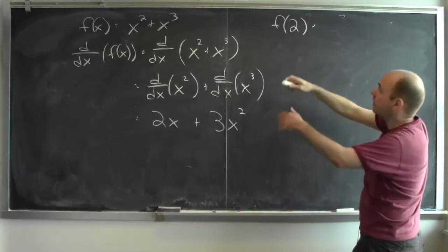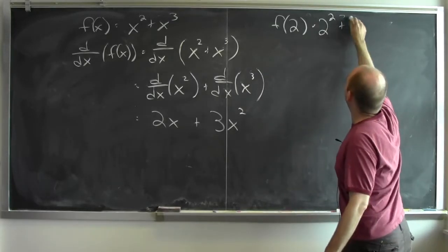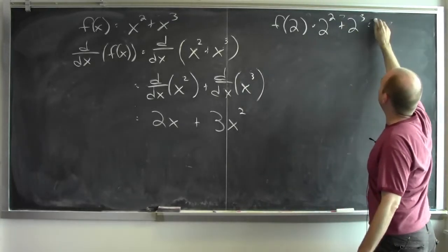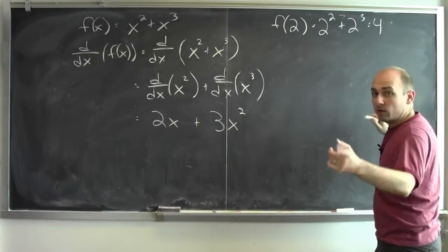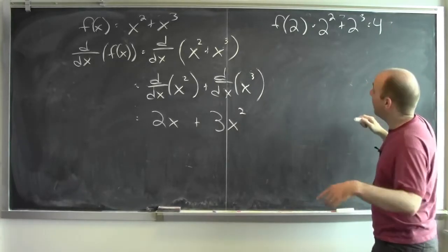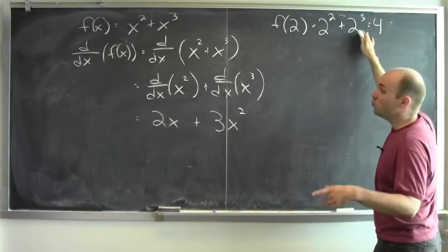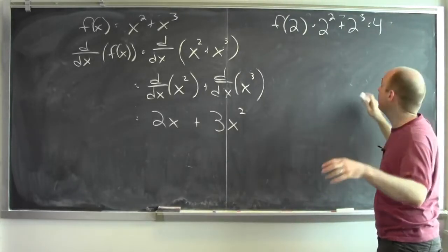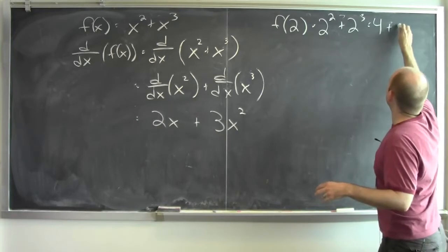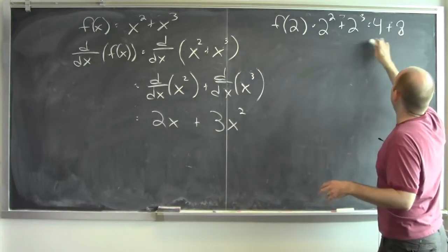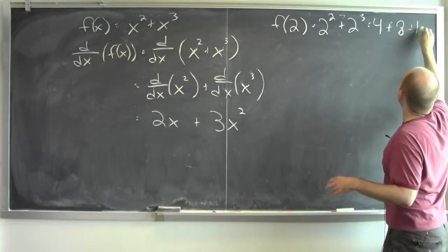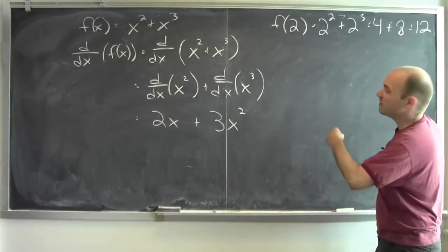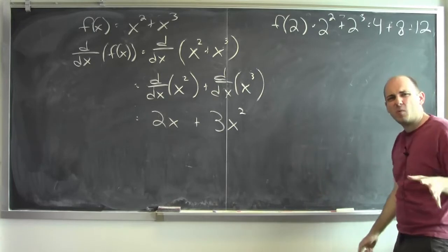When I plug in 2, I get 2 squared plus 2 cubed. 2 squared is 4 — 2 times 2 — and 2 cubed is 2 times 2 times 2, which is 8. And 4 plus 8 is 12. So that's the function's value at the point 2.